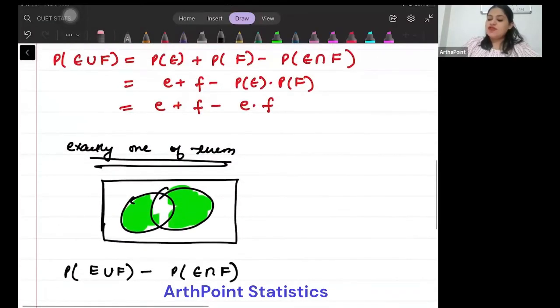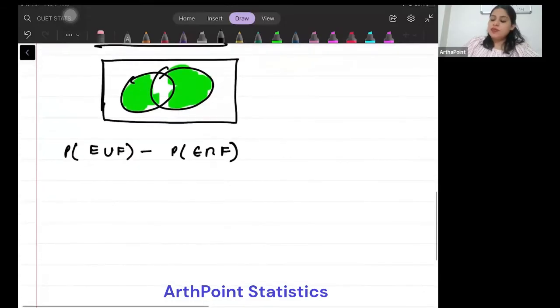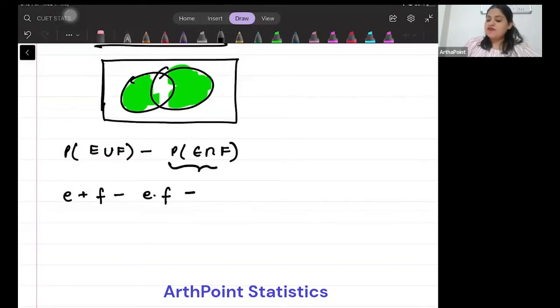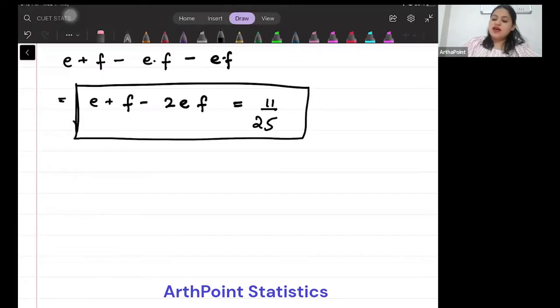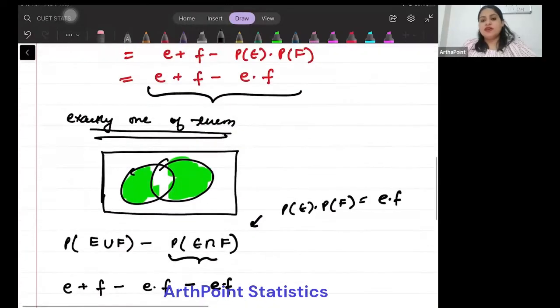Probability of E union F we have just calculated, so it will be E plus F minus EF. And E intersection F, since they are independent events, is probability of E into F. So it will be E plus F minus 2EF, and this is given to you as 11 by 25.